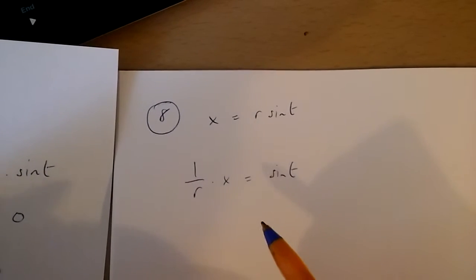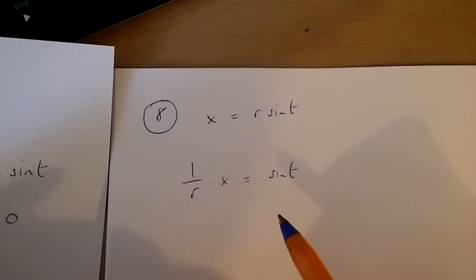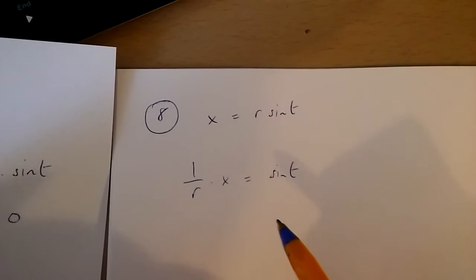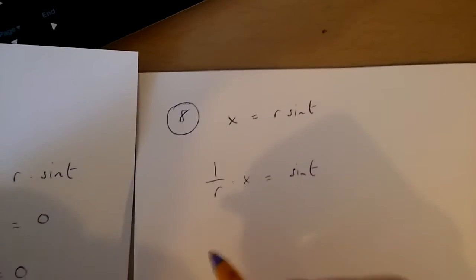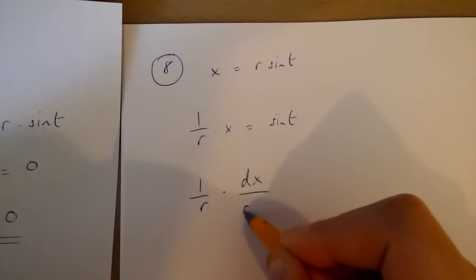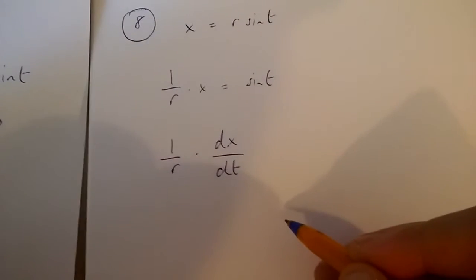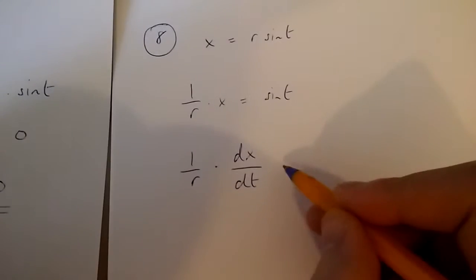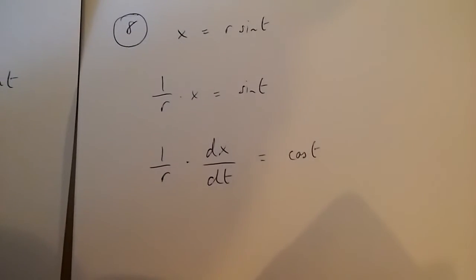Now, I'm going to use implicit differentiation to isolate dx over dt. So, if I use implicit differentiation over here, I get 1 over r times dx over dt is equal to cos t.